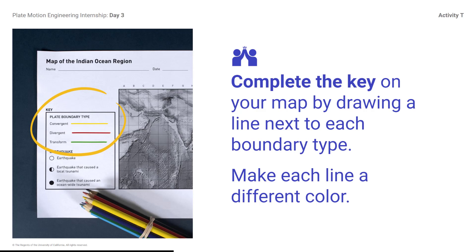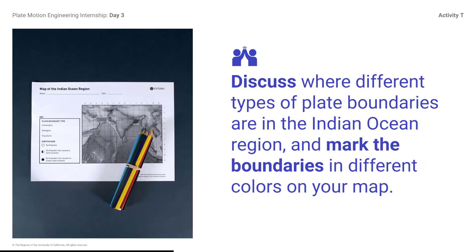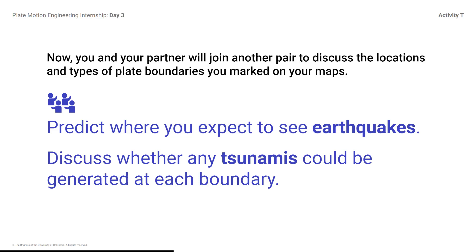It is recommended to use the following colors: yellow for convergent, red for divergent, and green for transform. You can ignore the earthquake key for this portion of the research. Reread Chapter 3, thinking about where you will mark the locations and types of plate boundaries in the Indian Ocean. Students, begin your dossier research. You can open the dossier using the link in the daily message. Look carefully at the tsunami threat zones map and the diagrams and images of different landforms associated with each plate boundary type. Discuss where different types of plate boundaries are in the Indian Ocean region, and mark the boundaries in different colors on your map. Now, you and your partner will join another pair to discuss the locations and types of boundaries you marked on your maps.